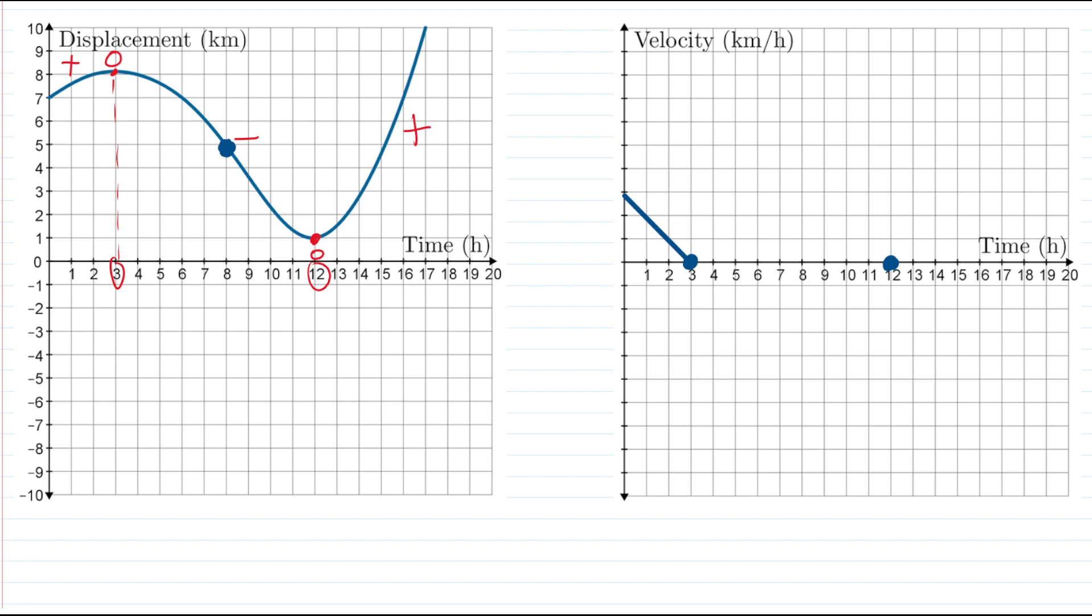So what I'm going to do on my velocity graph is I'm going to take my values from this zero here, and start making them negative until I get to about eight hours. Okay, now how negative? Well, this looks steeper than this here. So I'm going to go further down the y axis than whatever I started at here.